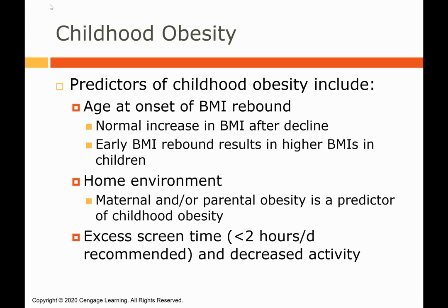Can we predict childhood obesity? There are definitely risk factors. Maternal obesity is actually a major risk factor for a child becoming obese — and it's not necessarily genetics; a lot of that has to do with the home environment. We also talked about BMI rebound: it's normal to see a slight BMI increase around age six or seven, but an even earlier BMI rebound results in higher BMIs in children. Seeing an earlier BMI rebound on a growth chart is a red flag and a known risk factor.